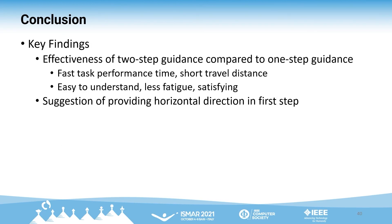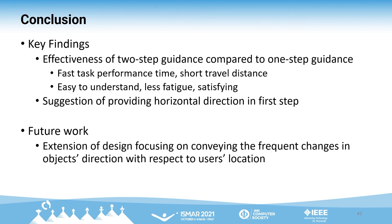We proposed two-step omnidirectional non-visual guidance for finding a target in 3D spaces and found its effectiveness compared to one-step guidance through a user study. The findings show that our two-step guidance outperforms the default condition, especially when horizontal direction guidance is provided first. Based on the findings, we plan to extend our work by applying and evaluating the design, focusing on conveying frequent changes in an object's direction with respect to the user's location in both virtual and real-world environments.